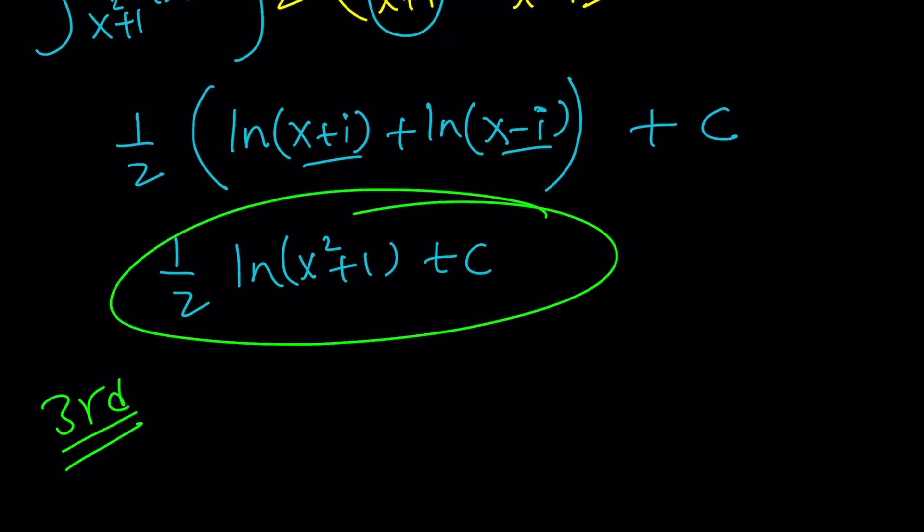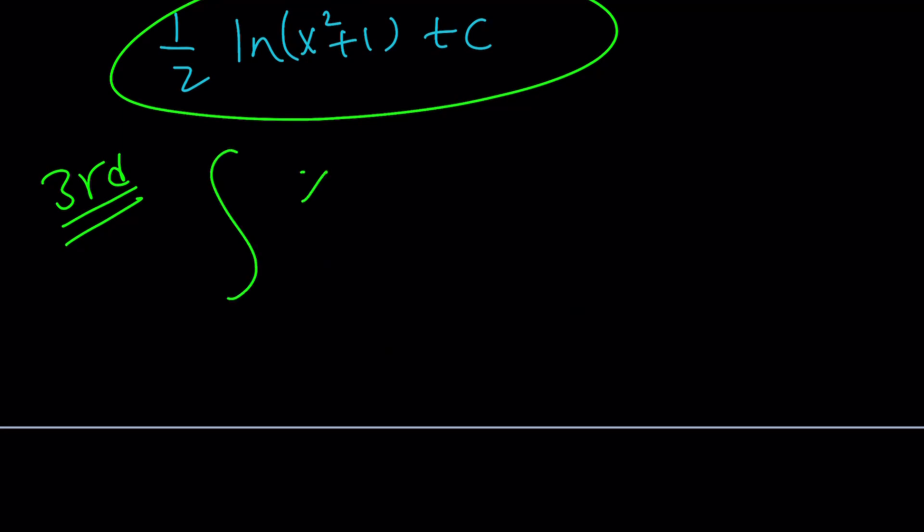And third method is actually really cool, but again, it's up to you to decide which one is the coolest. You're going to let me know, right? So, here's what we're going to do. When you see x squared plus 1, what are you thinking? What should you be thinking? You should be thinking x equals tangent theta. Yes, this does the trick.